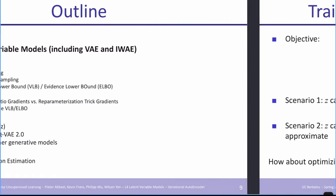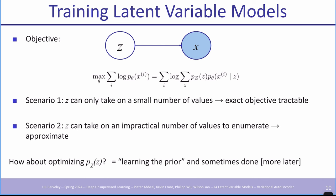Starting with training these models: Scenario one — the base case. If z can only take on a small number of values, the exact objective is tractable. The summation is easy to compute because p(z) is simple to evaluate and sample from, and if needed, we just enumerate all z's. p_theta(x | z) is also straightforward — even if it's a large neural network going from z to x, it's a calculation we can do. So we can directly optimize the exact objective.